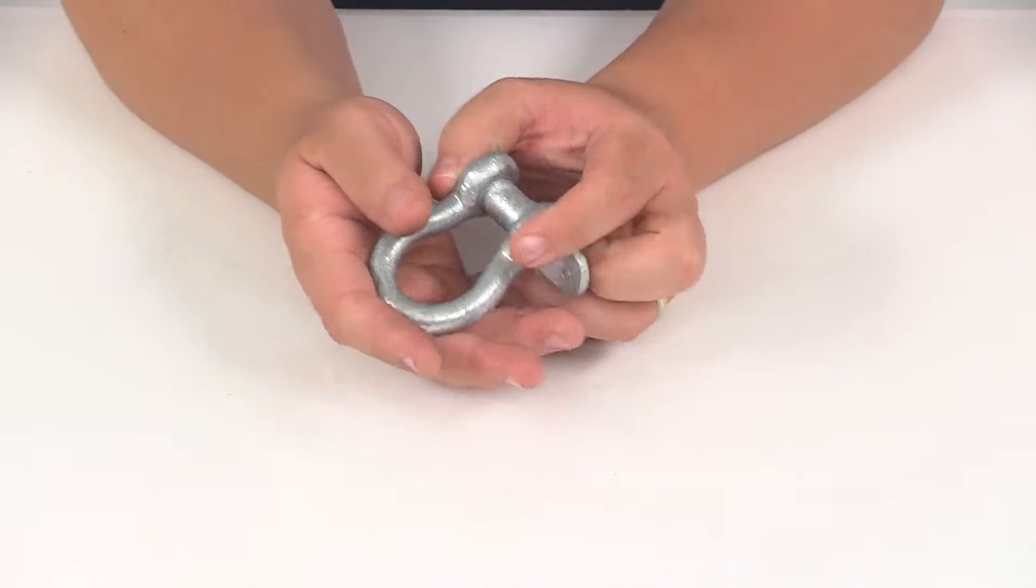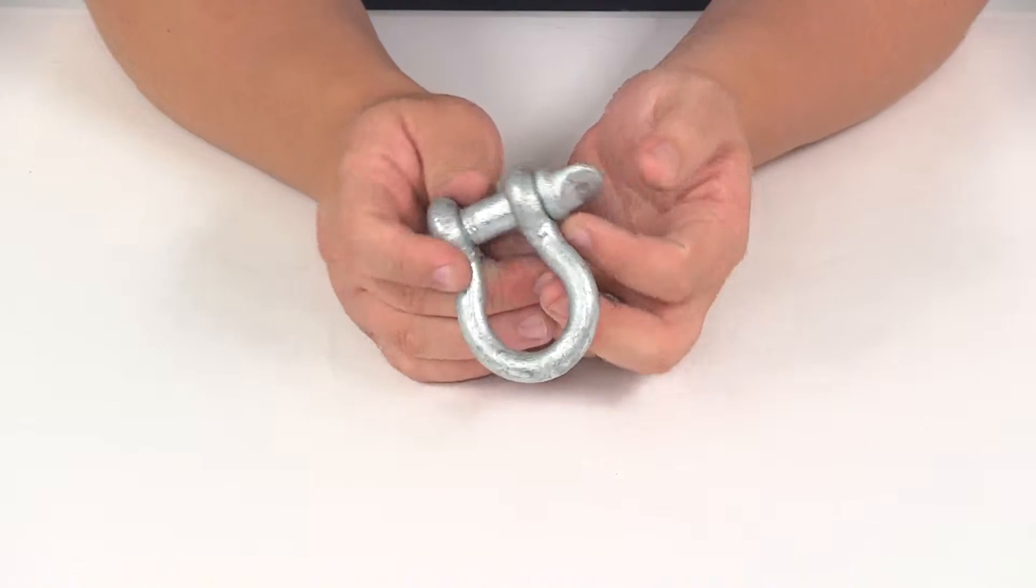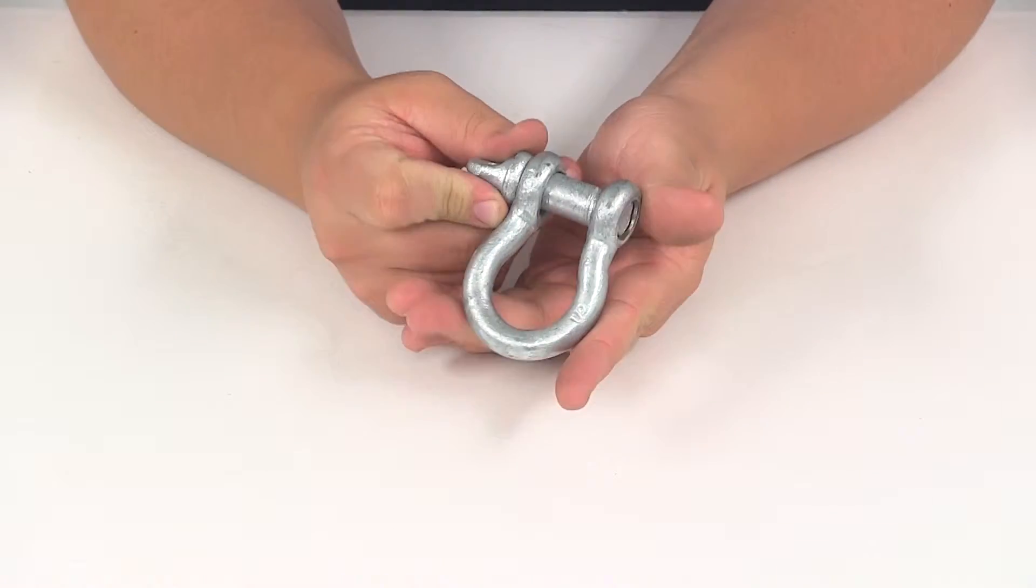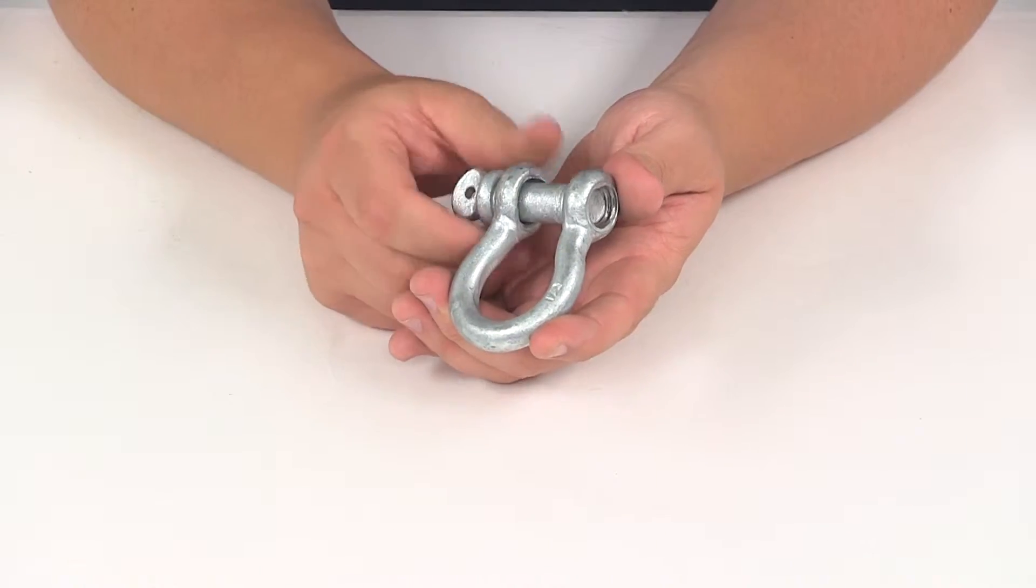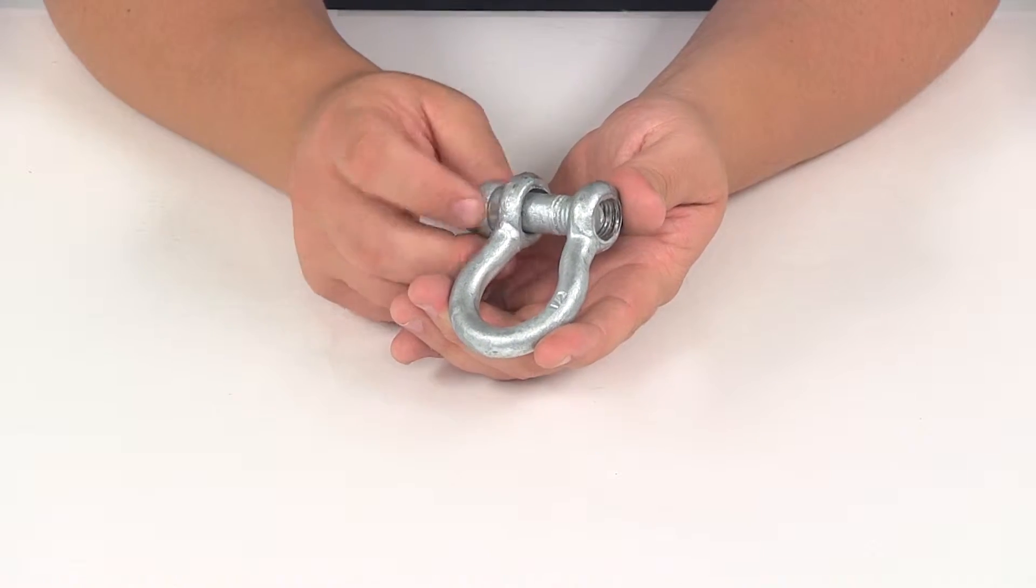Today we're going to be taking a look at part number GS07. This is the Brophy shackle with a screw pin design. These shackles provide strong secure connection points for winching and towing setups.